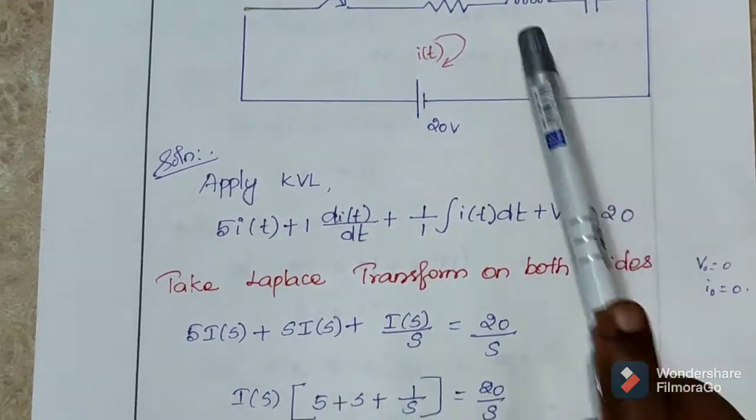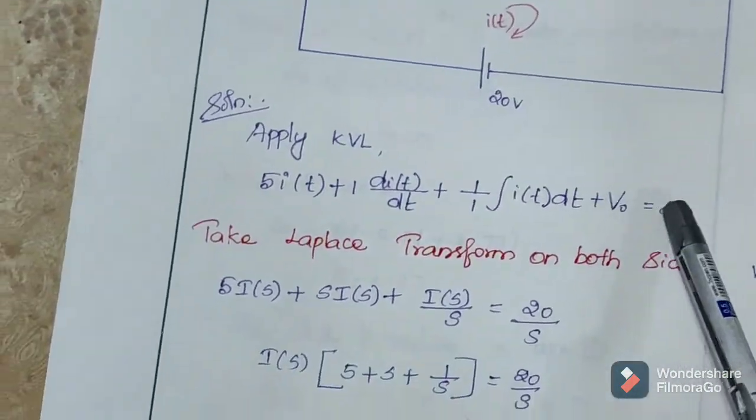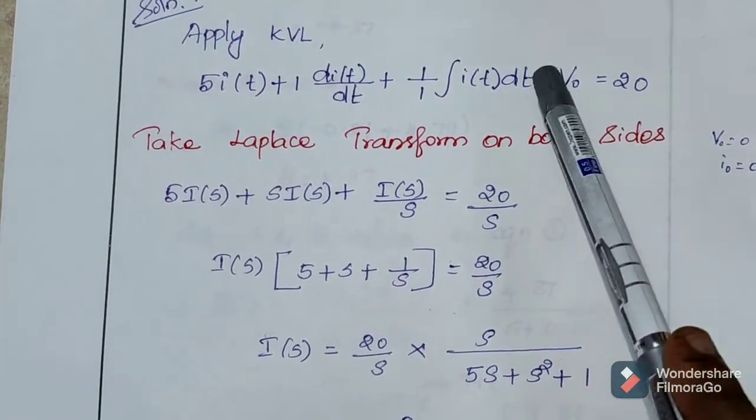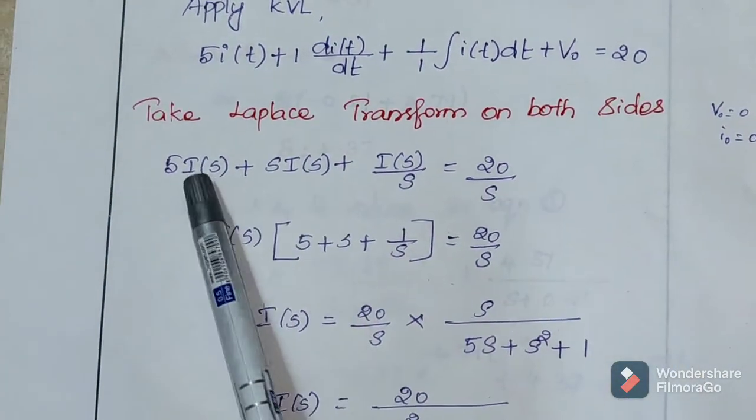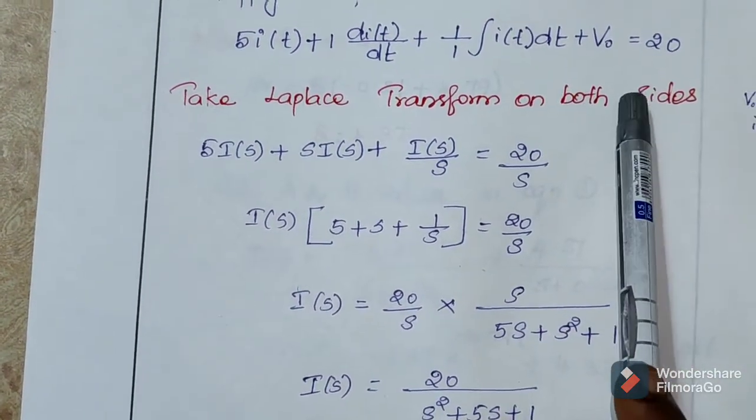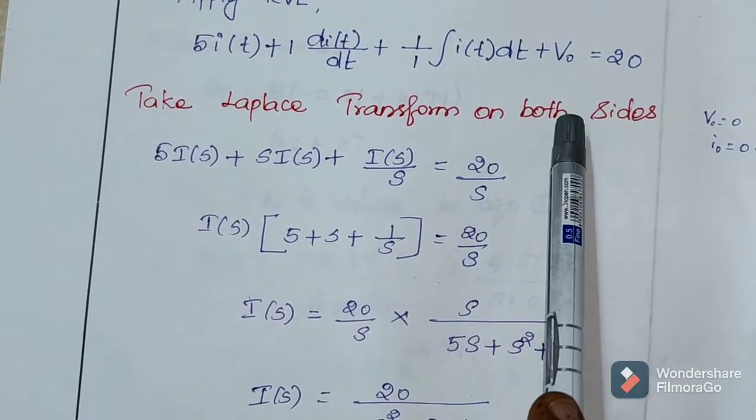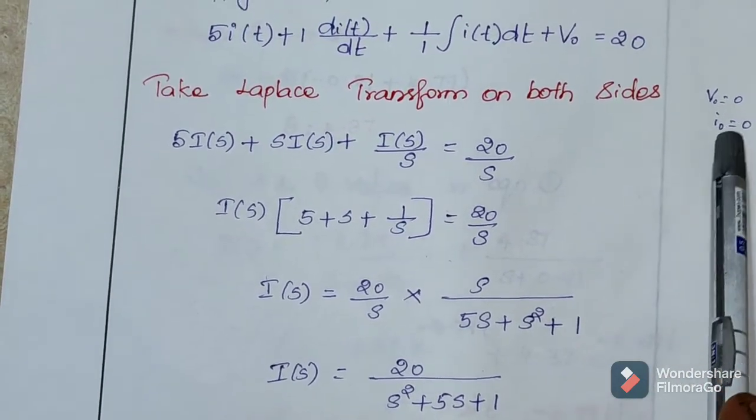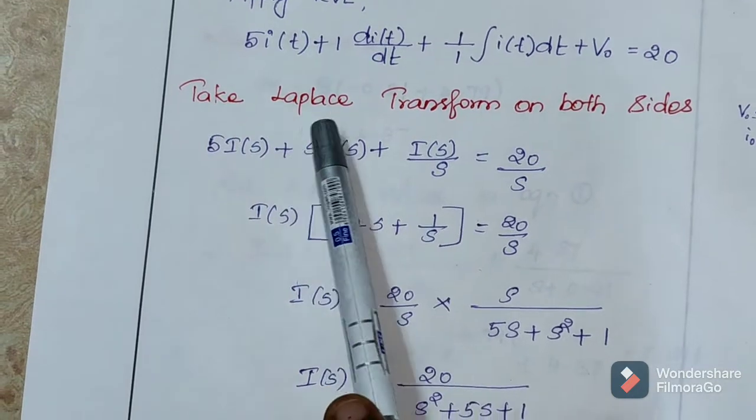And this is the integration constant. That is equal to, this is a rise in voltage. Always I say rise in voltage on one side, drop on one side. In the problem, initial current and initial voltage values are not specified. So, assume initial conditions are 0. V naught and I naught is 0.